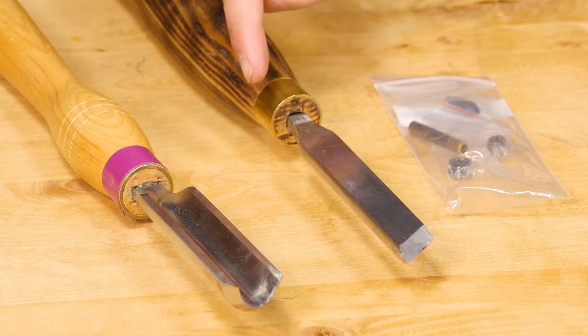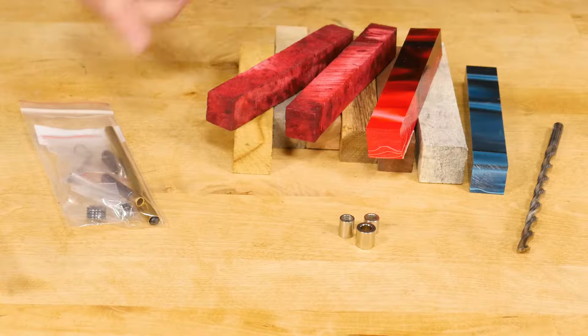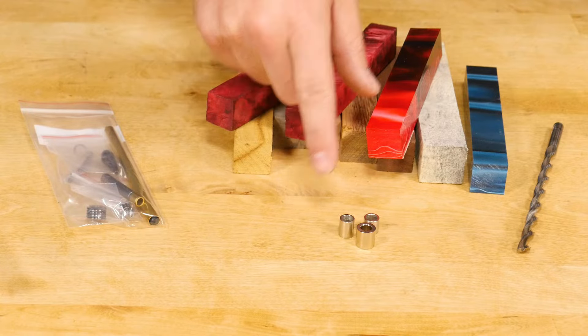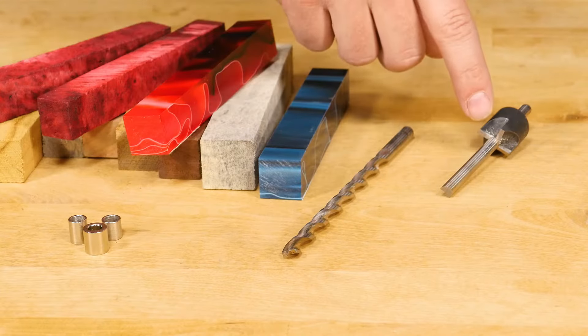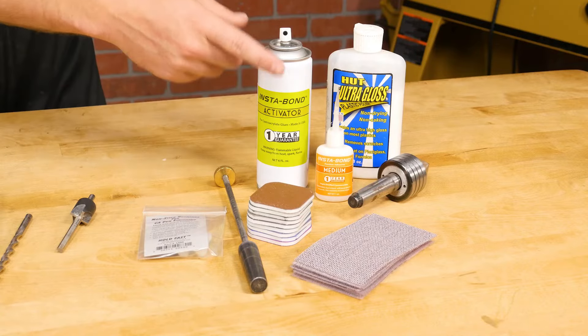Along with the turning tools, to complete this project you'll need a pen kit, a turning blank of your choice, bushings, a drill bit, a barrel trimmer, and some standard turning supplies.